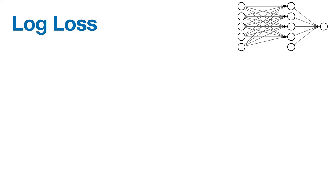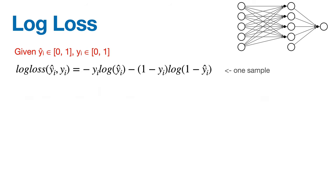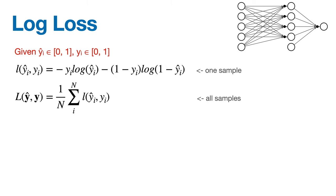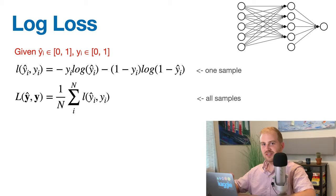That's right, log loss. For the uninitiated, given a prediction y-hat i in the range 0 to 1, and a true label yi also in the range 0 to 1, the log loss of this individual prediction equals negative yi times log of y-hat i minus 1 minus yi times log of 1 minus y-hat i. Then, the total log loss equals the average log loss across all predictions. I'll use a lowercase l to signify the log loss for a single sample, and a capital L to signify the average log loss for all predictions.